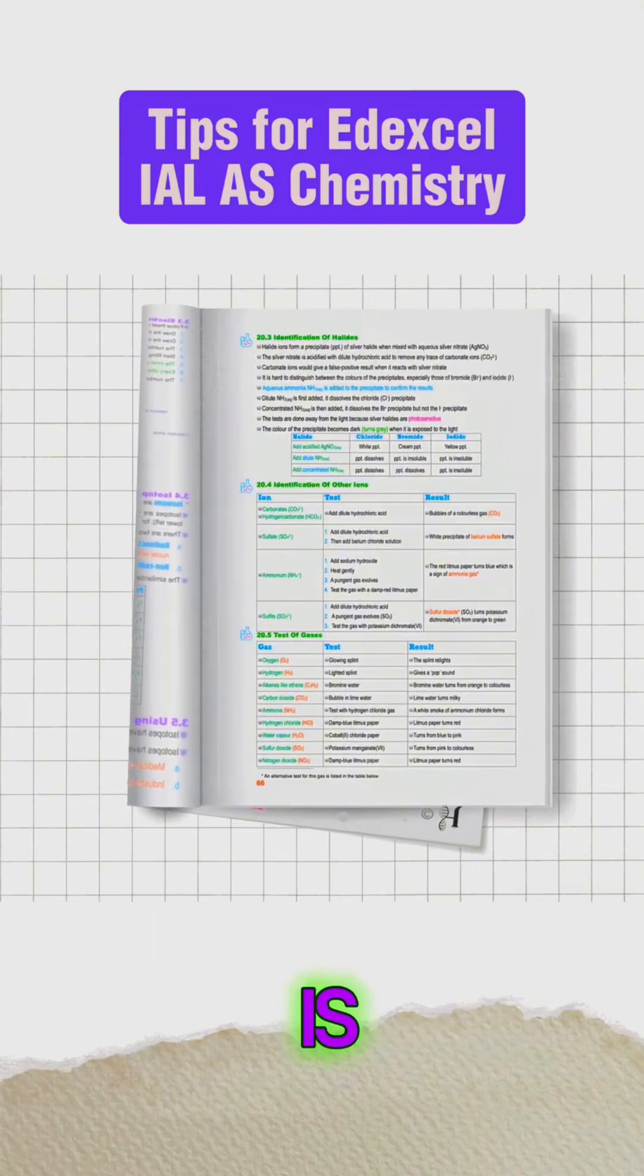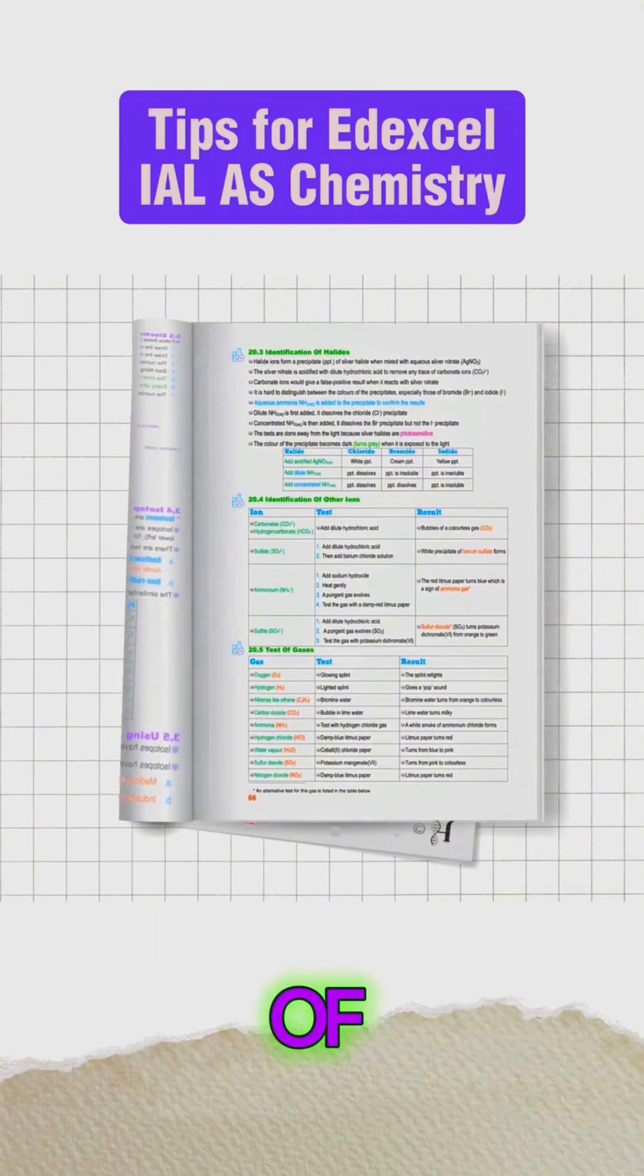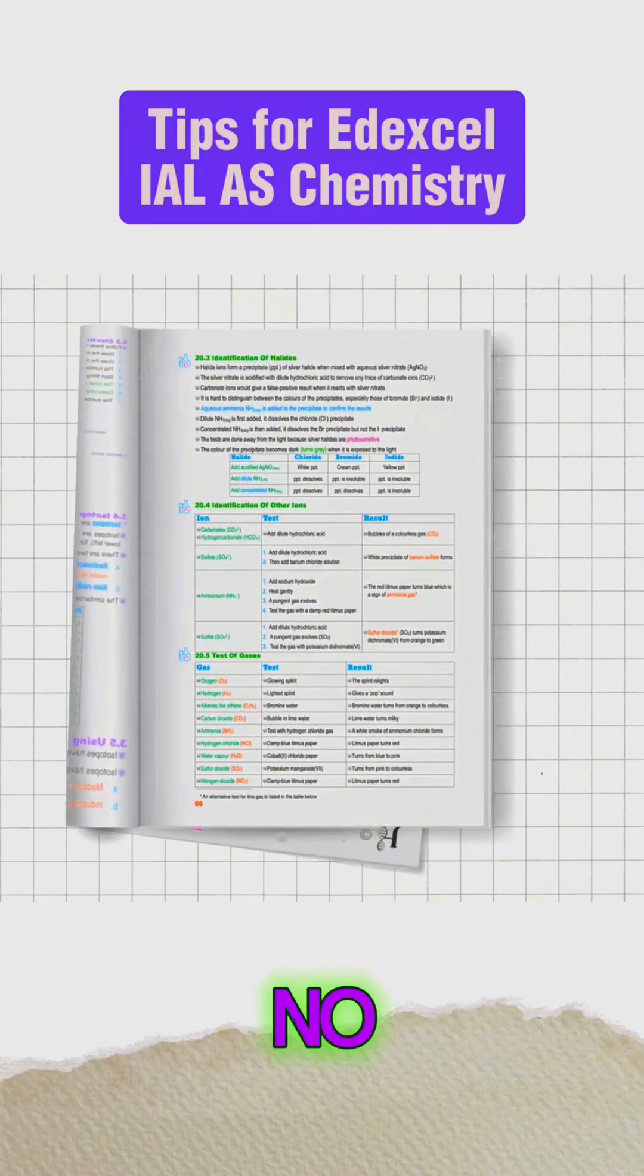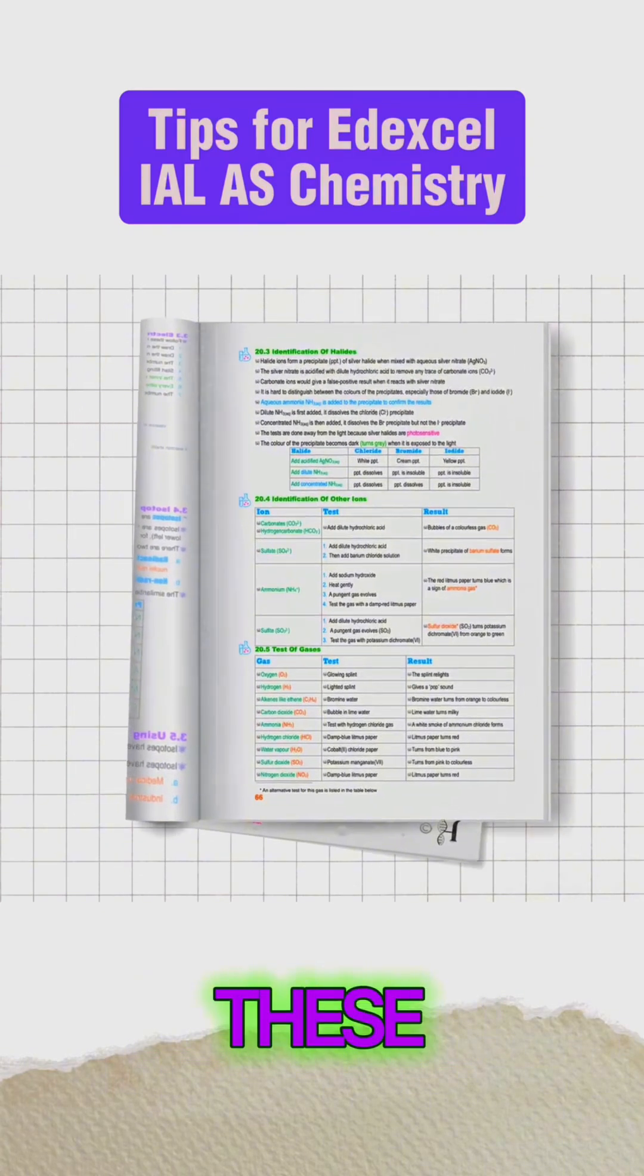One more practical tip is to learn the identification of ions and gases and the flame colors, since there will be no data sheet provided with this information.